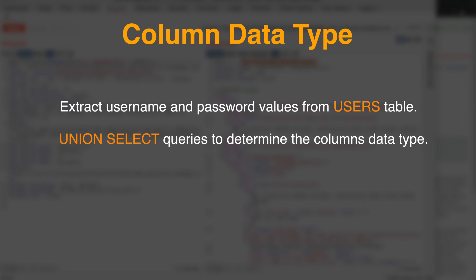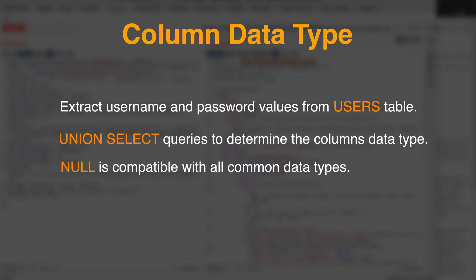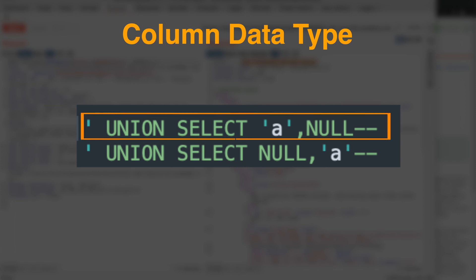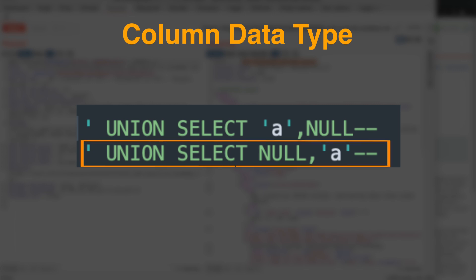The next step is to determine the data type of these columns. Since our goal is to extract username and password values from the users table, we are interested in columns that contain a string value. To determine which columns return string data, we use a series of UNION SELECT queries. We already know that the original query returns two columns, so we only need two UNION SELECT queries, each time putting a string value in one of the columns and using NULL for the other. NULL is compatible with all data types, so it will not cause an error when the application executes the injected query. The first query checks if the first column is a string, and the second query checks if the second column contains a string value.